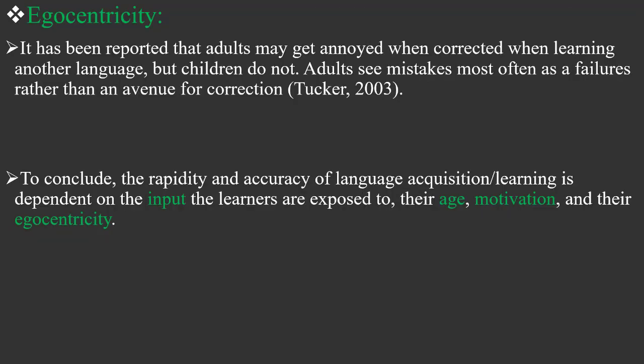Another factor is egocentricity. It has been reported that adults may get annoyed when corrected while learning another language, but children do not. Adults see mistakes most often as a failure rather than an avenue for correction. Children don't get annoyed when they make mistakes — for them it's fine. But adults, when they make mistakes and are corrected, feel embarrassed, as if they failed to produce correct language. This makes them afraid to participate next time, which hinders the learning process.